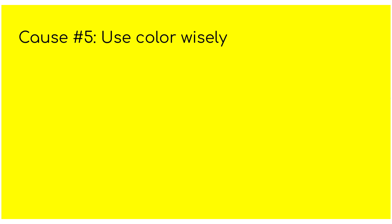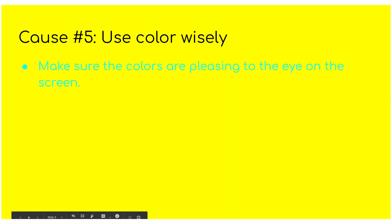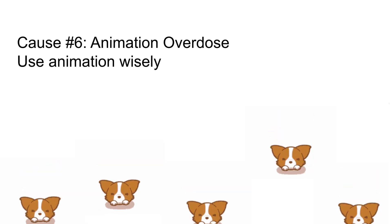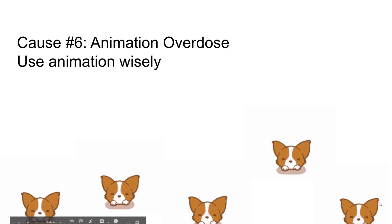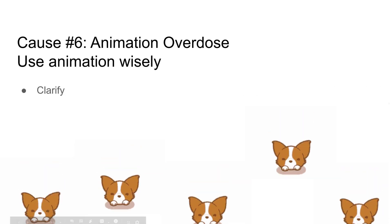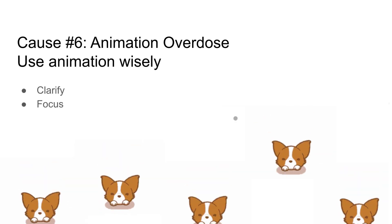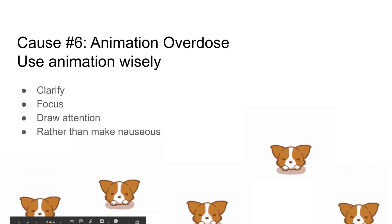Cause number five: poor color choices. Make sure that the colors you use are not only pleasing to the eye on the screen, but that they can also be seen clearly on the screen for the font colors. Cause number six: animation overdose. Use animation wisely — use it to clarify what you're trying to say, to help your audience focus on what you're talking about, or to draw attention to something specific, as opposed to just making them nauseous.